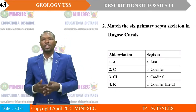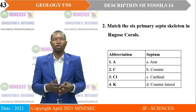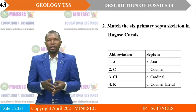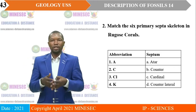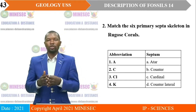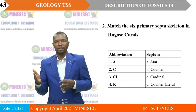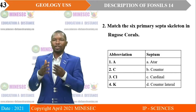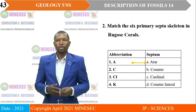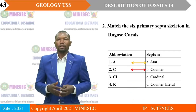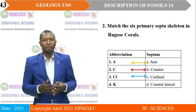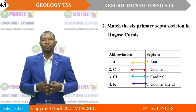Exercise two: Match the six primary septa skeletons in Rugose corals. You have the abbreviations: A, C, CL, and K. Remember that in the course of our lesson we indicated what those abbreviations signify. For the septum: A is for alar, C is for counter, CL is for cardinal, and K is for counter-lateral.